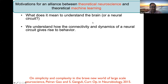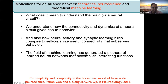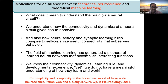What does it even mean to understand how the brain works? A proximal version of that question is we'd like to understand how the connectivity and dynamics of the neural circuit gives rise to behavior. Learning is very important — we'd like to understand how neural activity and synaptic learning rules conspire to self-organize useful connectivity that subserves behavior. Machine learning has generated lots of interesting learned neural networks that accomplish very difficult functions, yet we know everything about these systems — their connectivity, dynamics, learning rule, developmental experience — yet we don't have a meaningful understanding of how they learn and work.